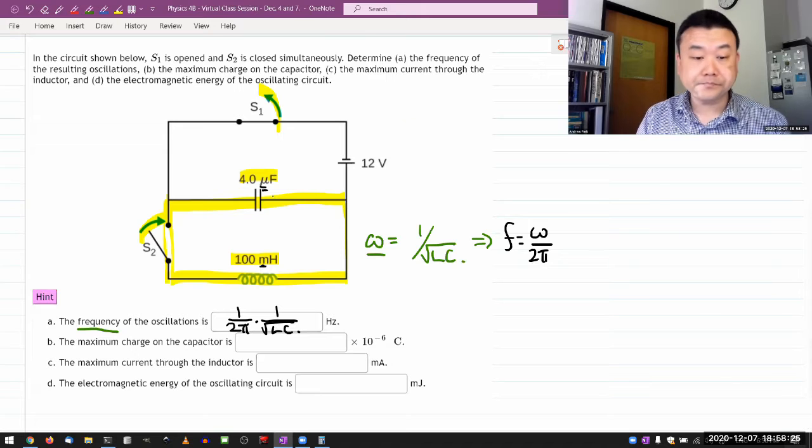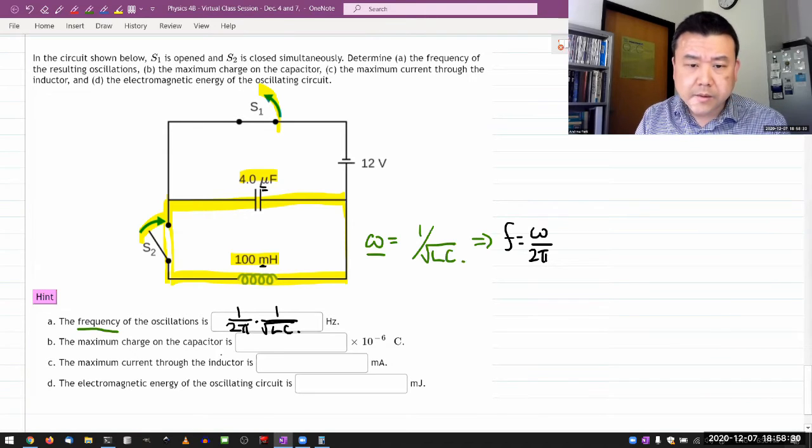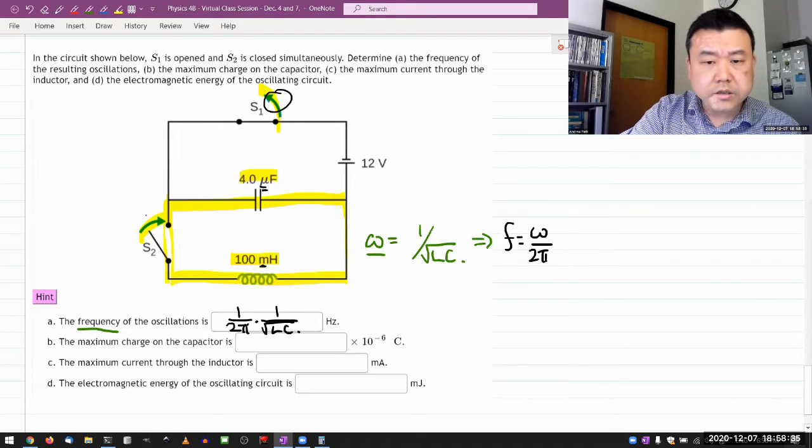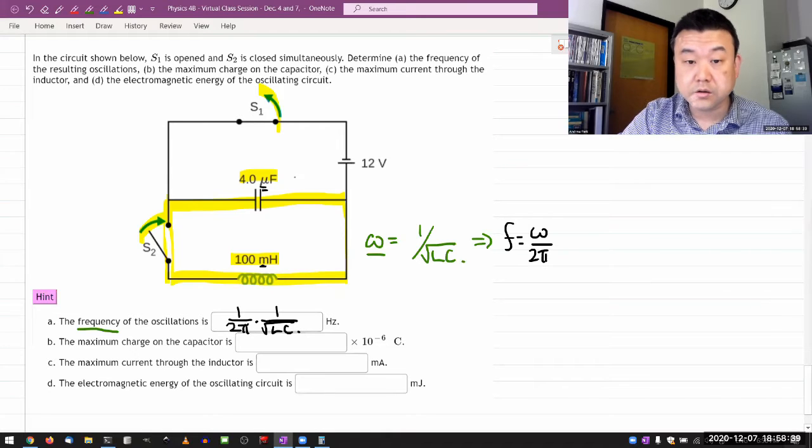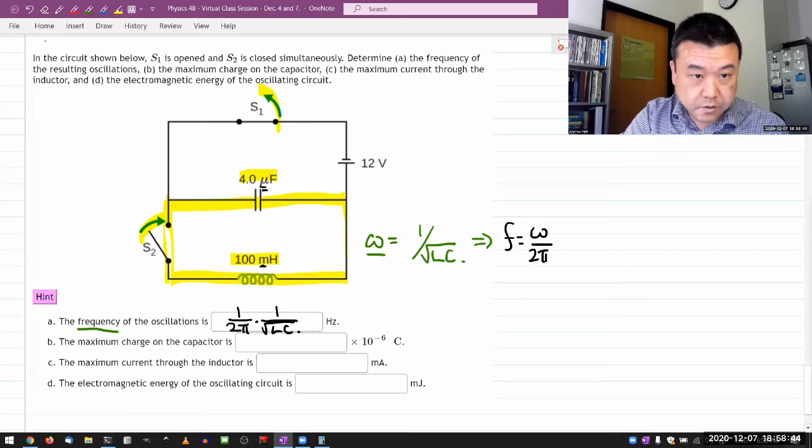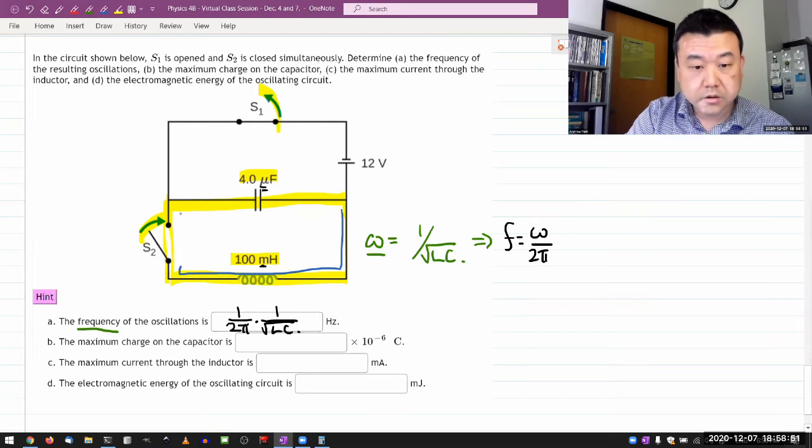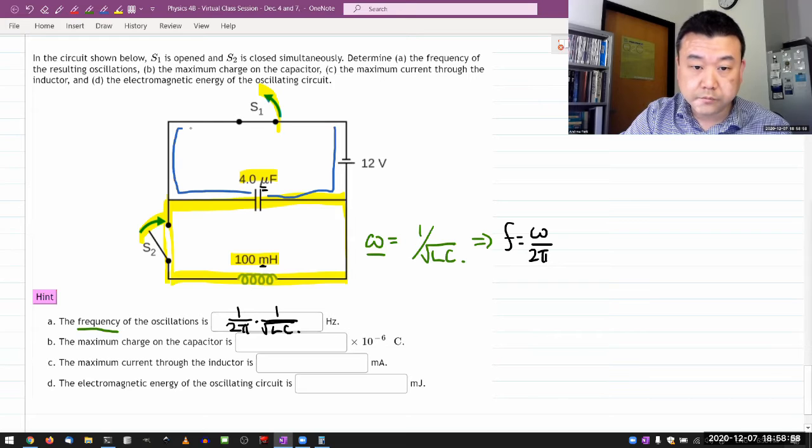So that should be maximum charge on the capacitor. I think that's determined by what happened before we did this stuff with the switches, because what I'm looking at is the initial condition before we open this S1 and close this too. So basically, this entire branch is inactive, because it's got a broken circuit here. So initially, the circuit really looked like this, a single capacitor hooked up to the battery.